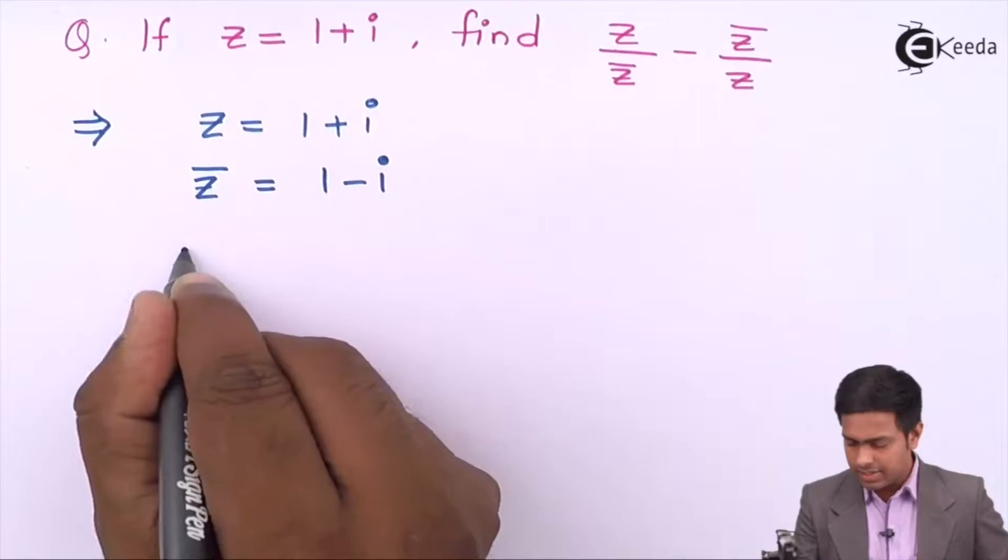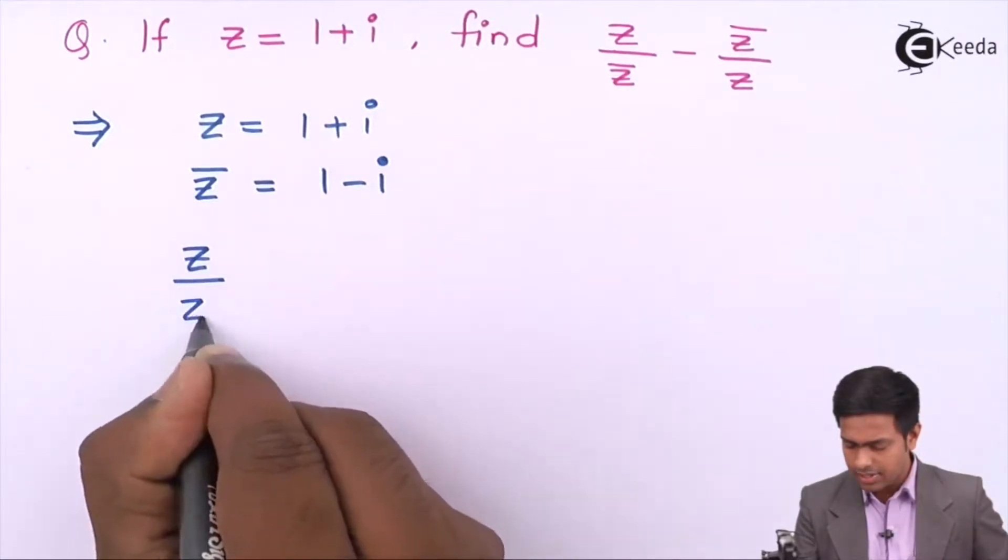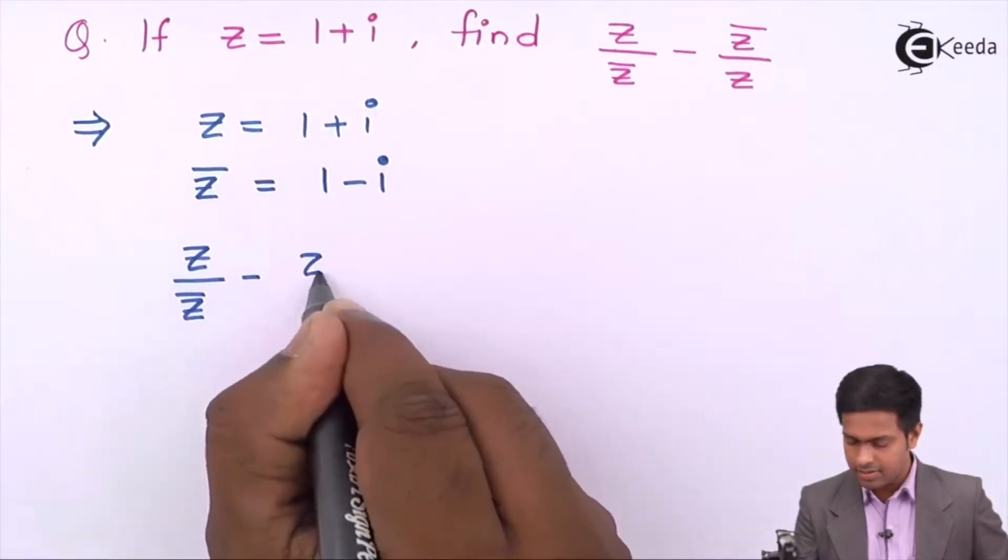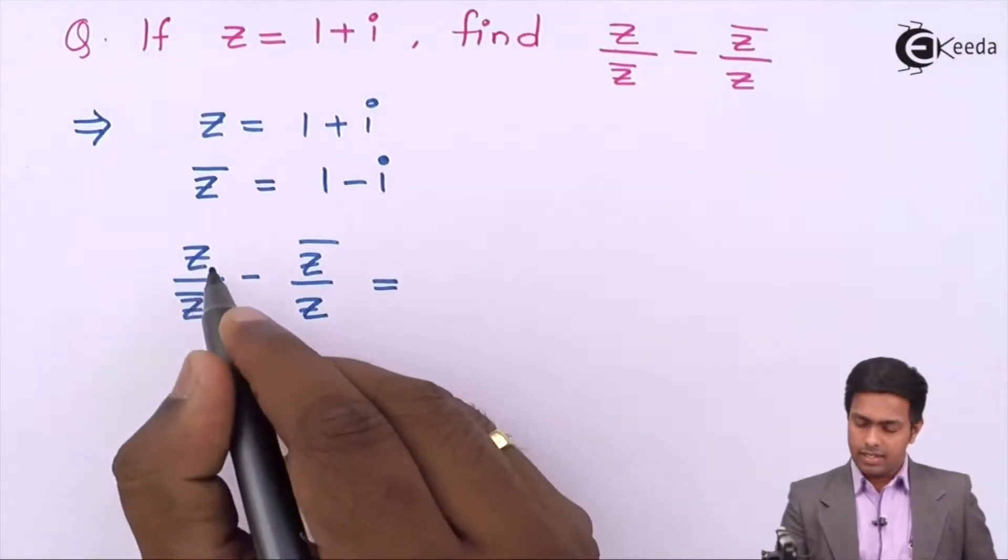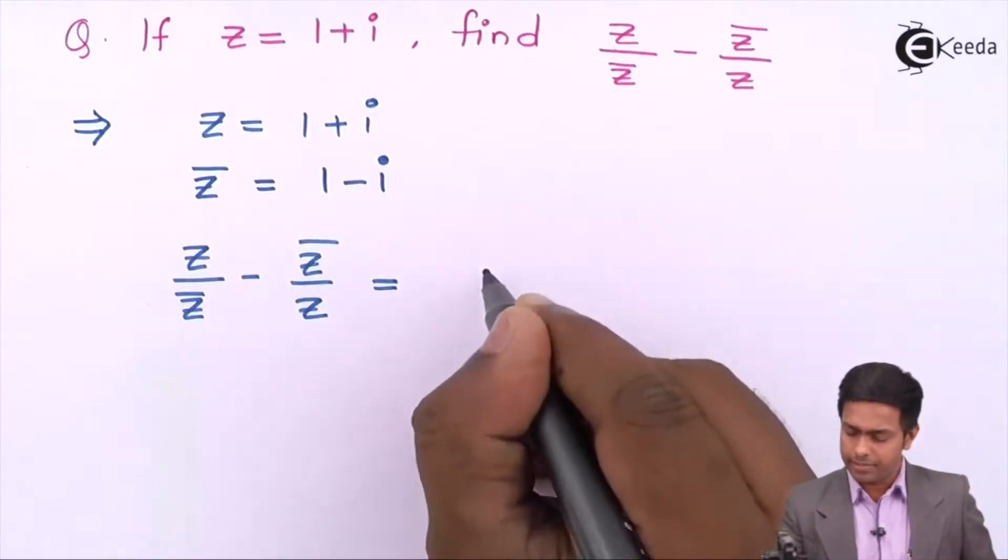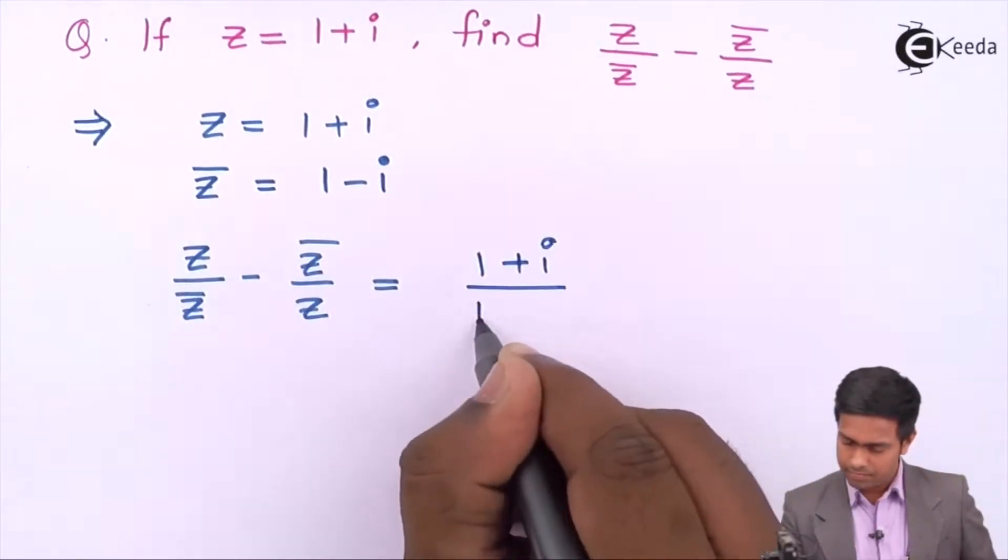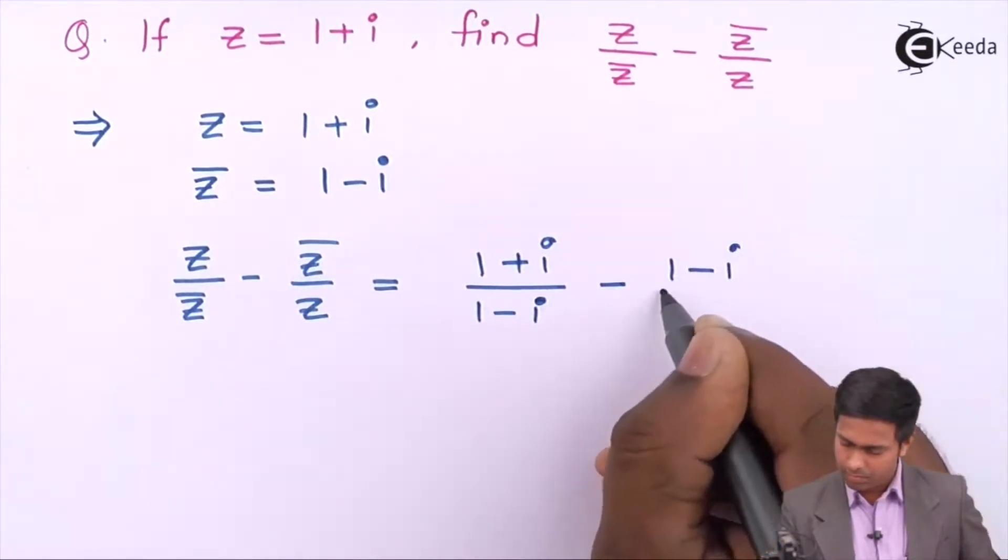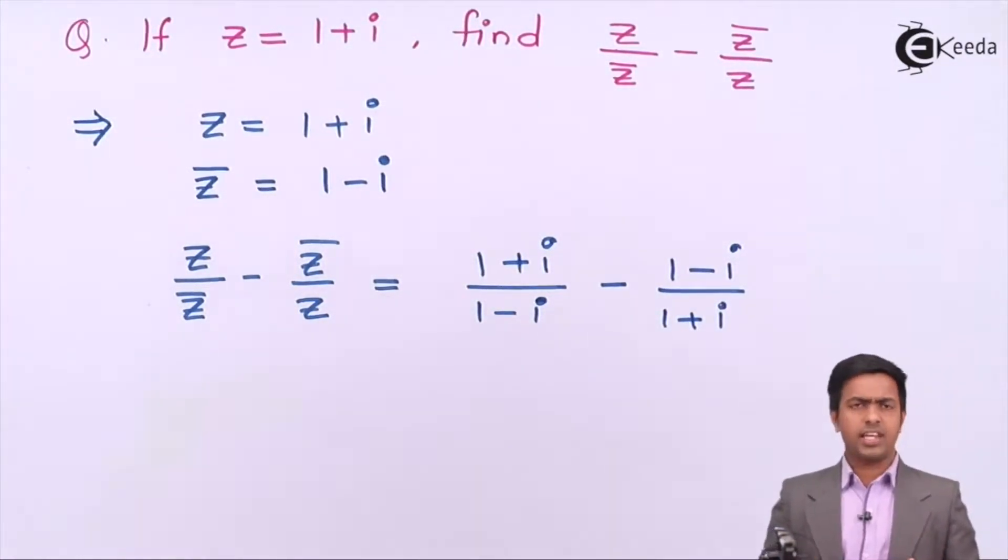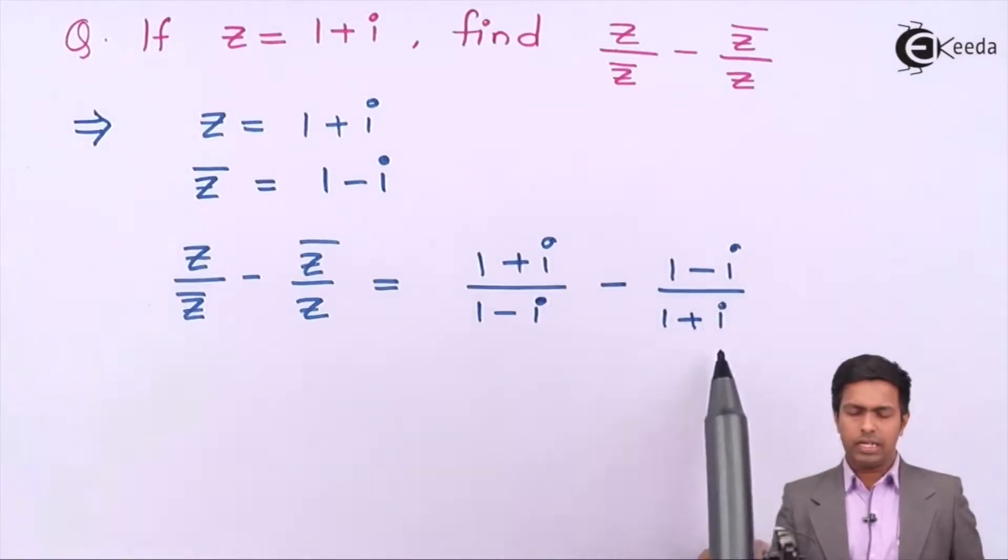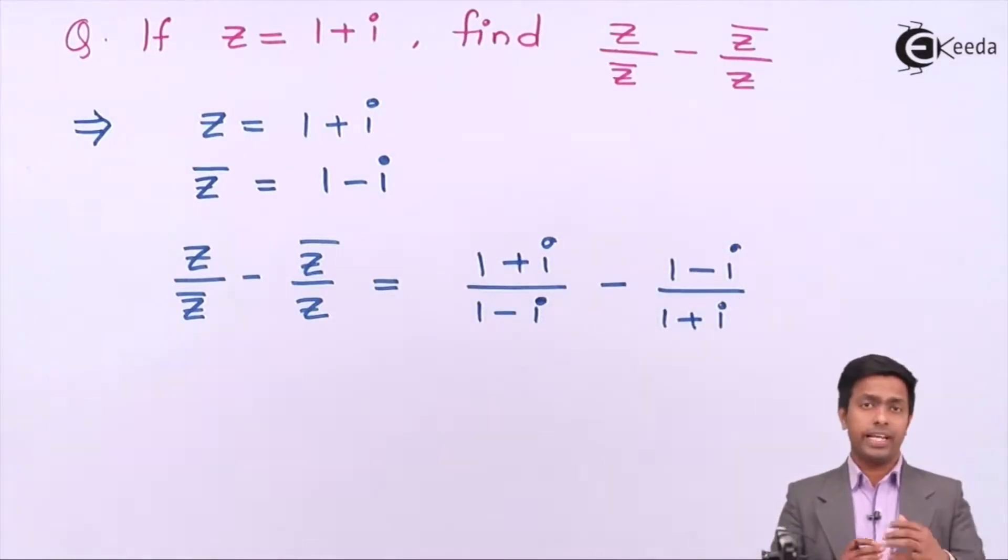The question is z upon z bar minus z bar upon z. Let's put this value. Now last task is we just have to solve these two terms to get the answer.